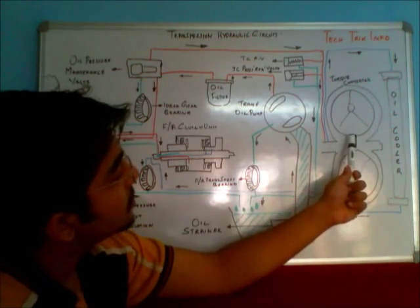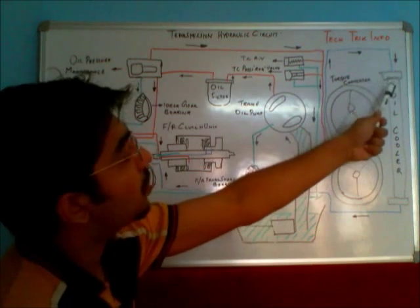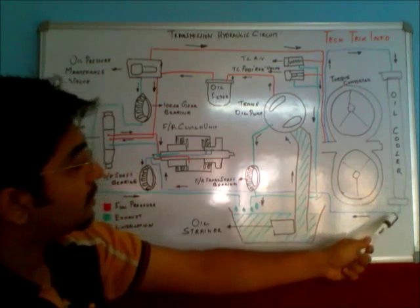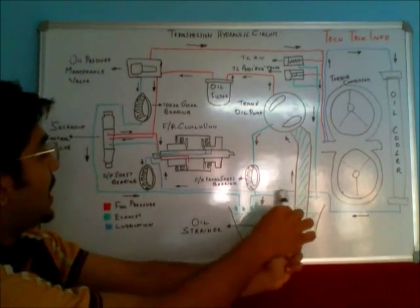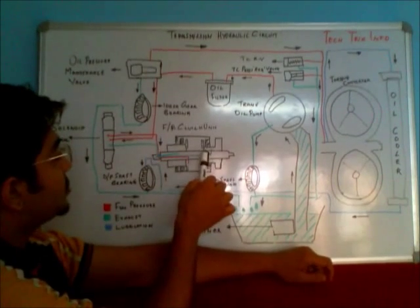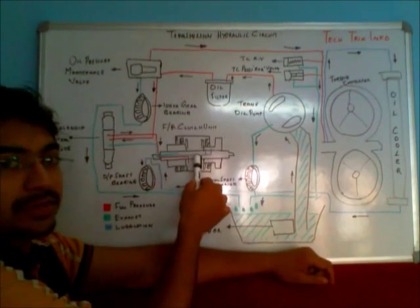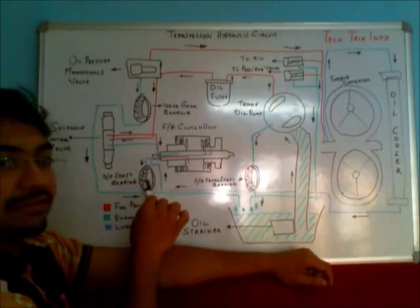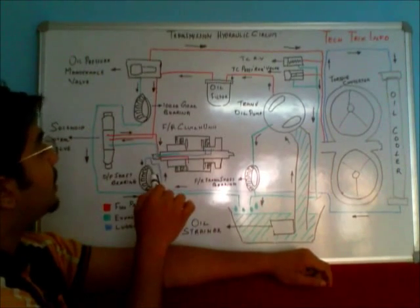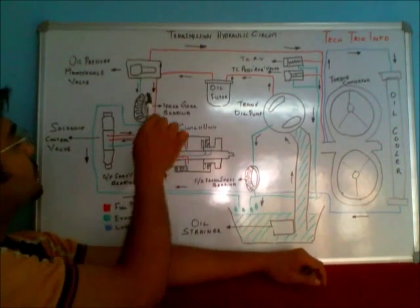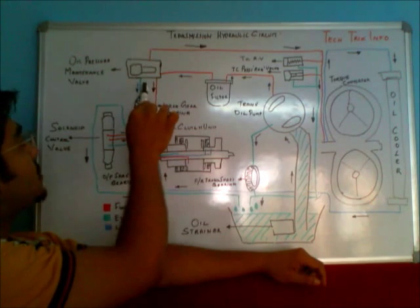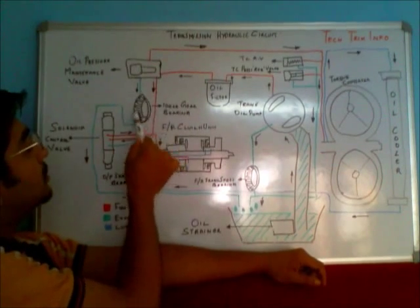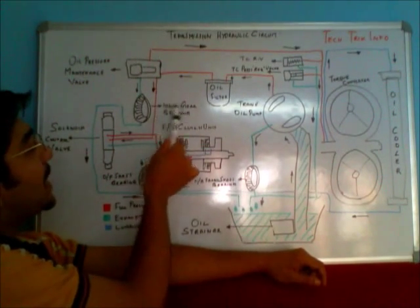There is also lubrication happening in the circuit. From the torque converter line, you can see the blue line going towards the oil cooler, which cools the transmission oil. From there it enters the forward reverse clutch unit, cooling it as well as cooling the output shaft bearing. Also, the return line from the oil pressure maintenance valve (PMV) cools and lubricates the idler gear bearing.